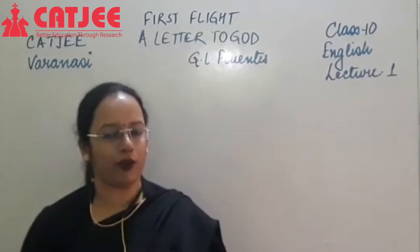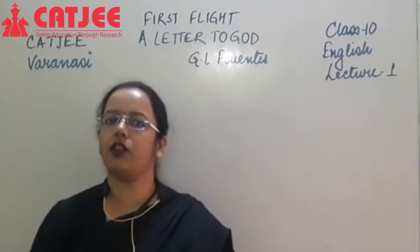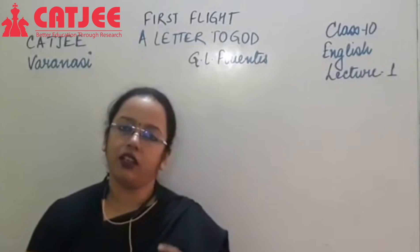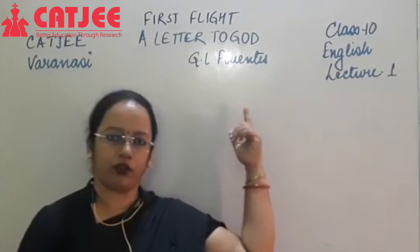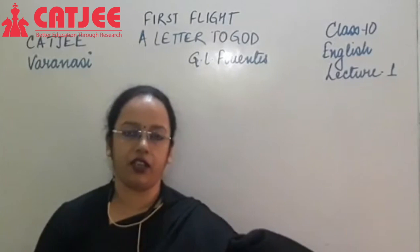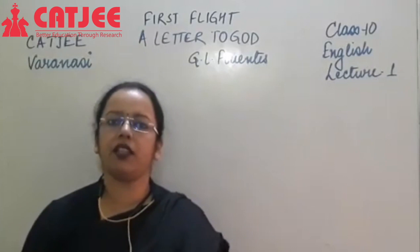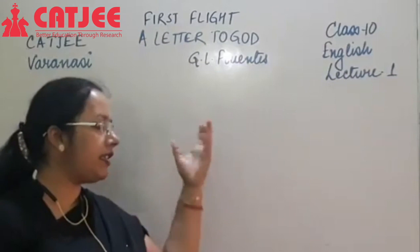Good morning children, welcome to Class 10th and CAT G online classes. Today we are going to start English. There are two books in English that you have to study in Class 10. The first one, written at the top on the board, is 'First Flight.' The other book is called 'Footprints Without Feet,' which we shall take up later. Today we will be starting with First Flight, Chapter 1 — 'A Letter to God.'